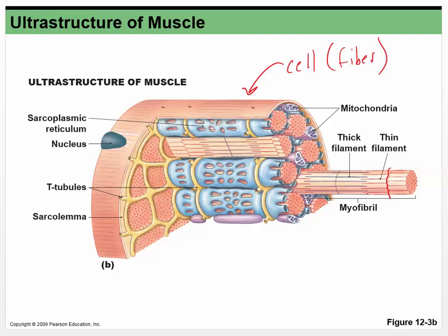Imagine these guys sliding past each other like an accordion — they're sort of pushing on each other and that's going to shorten it. Ultimately that's what we're after, but we have to get the signal in here. This is called the sarcoplasmic reticulum — you're going to have to know what that is and what's in it. Calcium is contained in there, and that's what's going to cause the muscle contraction.